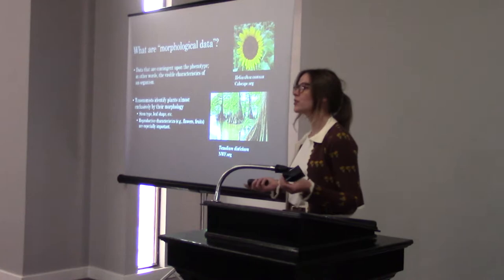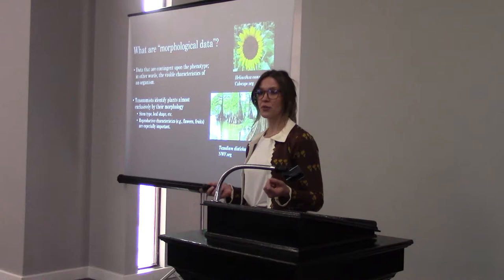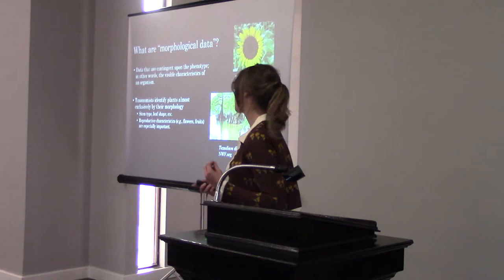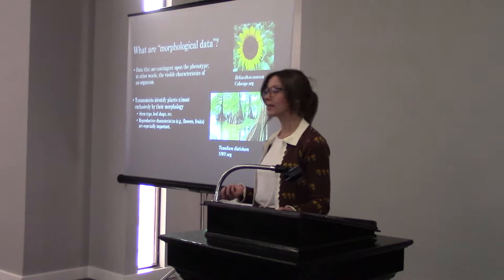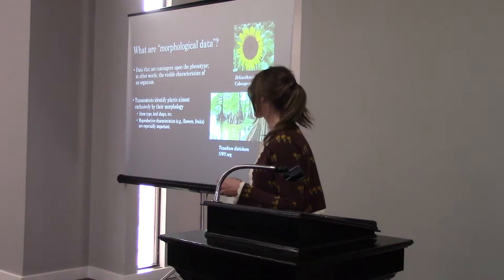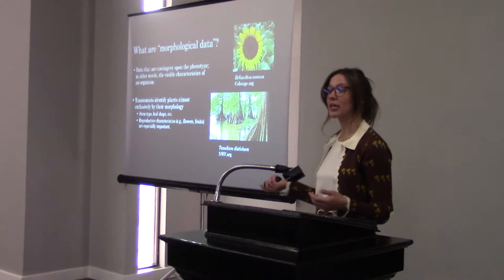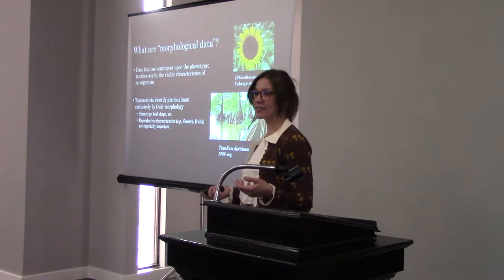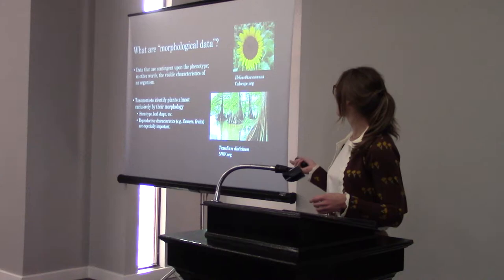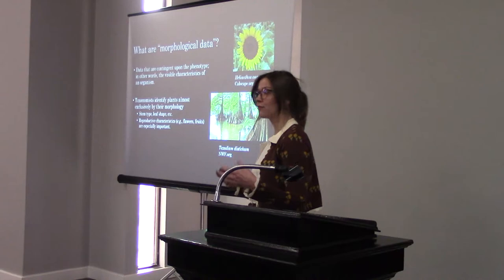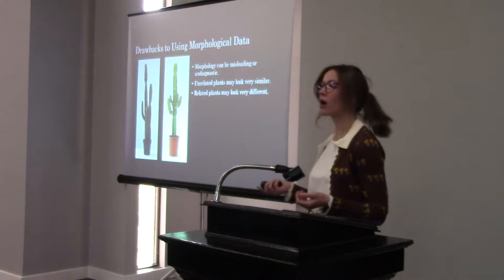Before we get into the meat and bones of this presentation, I want to establish the definition of morphological data. This is data that are contingent upon the phenotype of an organism — basically, if you go out and look at a plant, it's what you can see, those plant parts that you can visually see with your eyes. Taxonomists use this almost exclusively to identify plants in the field. They use things like stem type, leaf, and also really important reproductive characteristics like the flowers and fruits. For example, the bald cypress tree has a really diagnostic morphological characteristic — the knees that come up from the base of the tree. And everyone can see that a sunflower is a classic sunflower because the morphological, reproductive features tell you that.